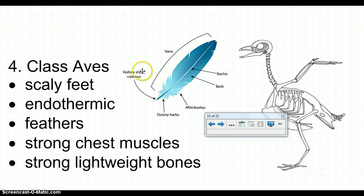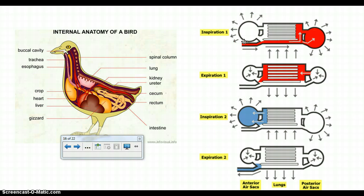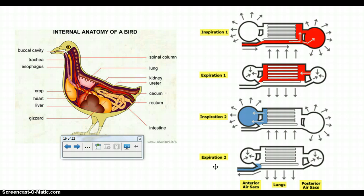Birds are pretty interesting. They have scaly feet, which comes from their reptile ancestry. They're endothermic — warm-blooded. They have feathers, strong chest muscles for flying, and strong lightweight bones with pockets of air that make them light but still very strong. One neat thing about a bird's respiratory system is its unique way of breathing: inhaling through external nares, air goes into a posterior air sac, then into the lungs, then into an anterior air sac, and then out. It takes two breaths for a full cycle of air through the bird's body.